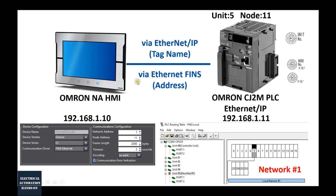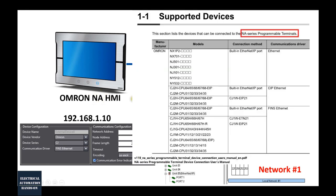So why are we going to use the NA HMI with a CJ2M PLC? This is a retrofit project with an existing CJ1M PLC, which is an older style and doesn't have built-in EtherNet/IP. So in this project, we upgraded the CJ1M to CJ2M, which has built-in EtherNet/IP. That allows us to connect to I/O banks, robots, or other HMIs using an Ethernet cable. I also confirmed that the NA series HMI definitely supports the CJ2M PLC.